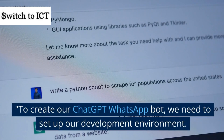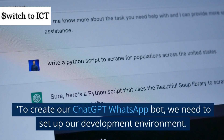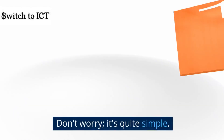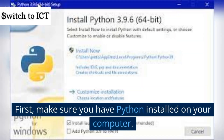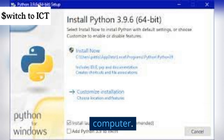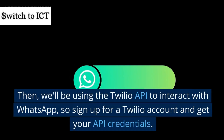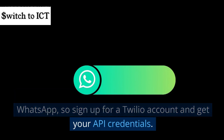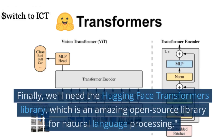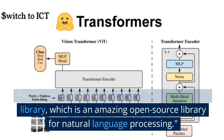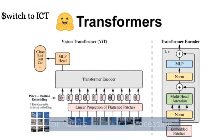To create our ChatGPT WhatsApp bot, we need to set up our development environment. Don't worry, it's quite simple. First, make sure you have Python installed on your computer. Then, we'll be using the Twilio API to interact with WhatsApp, so sign up for a Twilio account and get your API credentials. Finally, we'll need the Hugging Face Transformers library, which is an amazing open source library for natural language processing.